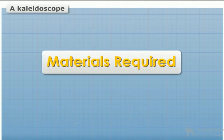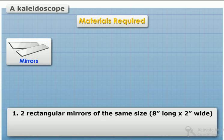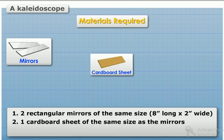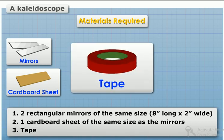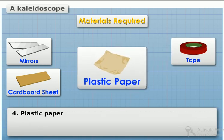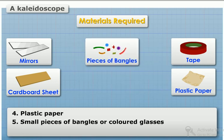Materials required: Two rectangular mirrors of the same size, 8 inches long and 2 inches wide; one cardboard sheet of the same size as the mirrors; tape; plastic paper; small pieces of bangles and colored glass; and glue.